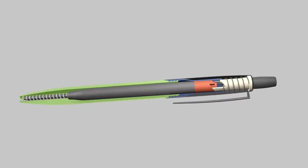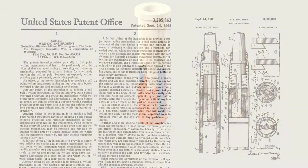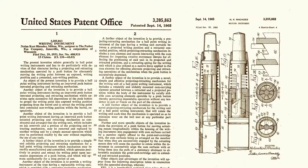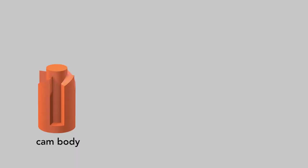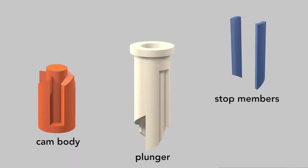Inside that tube is where all the action happens. A Parker Pen Company patent describes the three parts that produce the pen's click: the cam body, the tubular plunger, and the stop members.